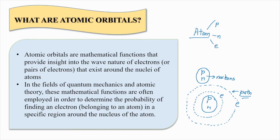Atomic orbitals are mathematical functions that provide us insight into the wave nature of electron. That means this particular nature of electron which allows the electron to move around the nucleus is the same nature of electron or pair of electrons that exist around the nuclei of the atoms. Apart from that, we have in the fields of quantum mechanics and atomic theory, these mathematical functions are often employed in order to determine the probability of finding an electron.